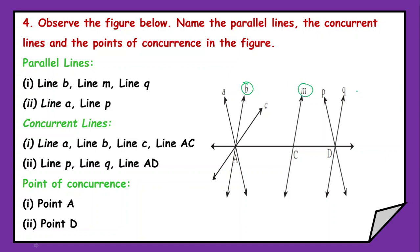They won't intersect. So they are going to be parallel. Similarly, if I talk about line A and line P, they also won't intersect. So they will also be parallel lines.